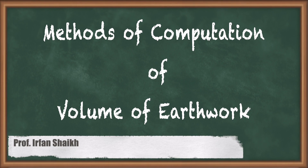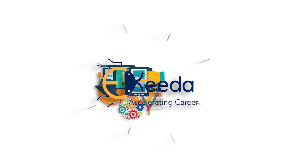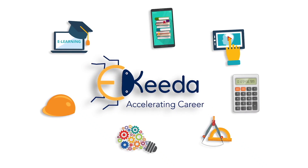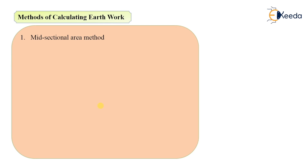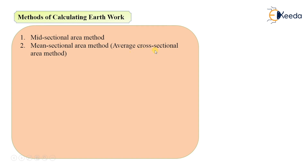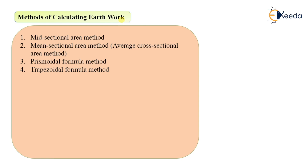Hello everyone. In this video we are going to see methods of calculating earthwork. The first method is mid-sectional area method, then we have mean sectional area method — mean means average, so it is also known as average cross-sectional area method. Then we have prismoidal formula and lastly trapezoidal formula. These are the four methods available for the calculation of earthwork for any embankment.